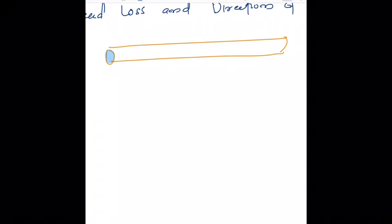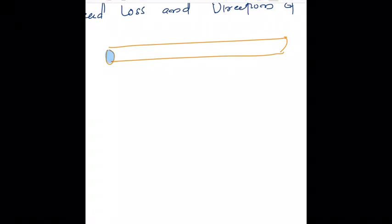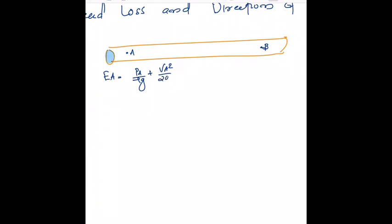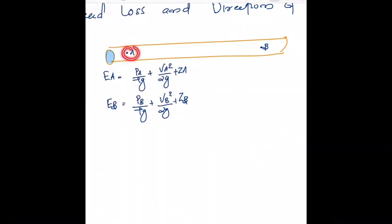Imagine there is a pipe and some fluid is flowing. In this pipe there are two points, point A and point B. From Bernoulli's principle, the energy at A is equal to: p_A by ρg plus v_A squared by 2g plus z_A, and energy at B is equal to p_B by ρg plus v_B squared by 2g plus z_B.